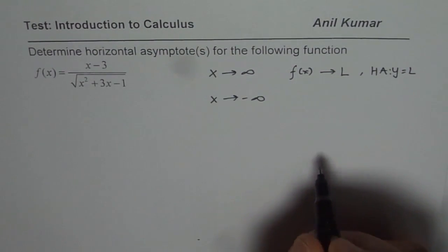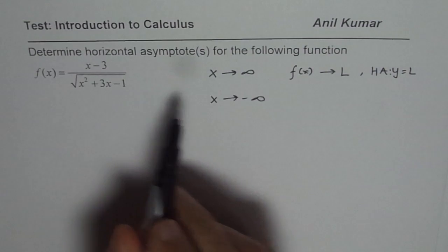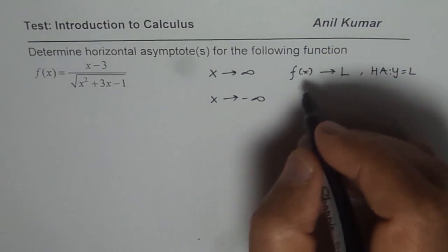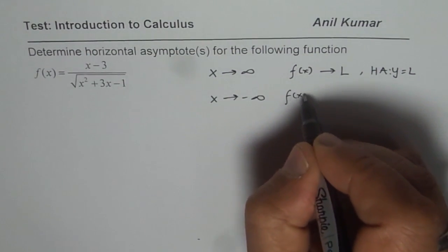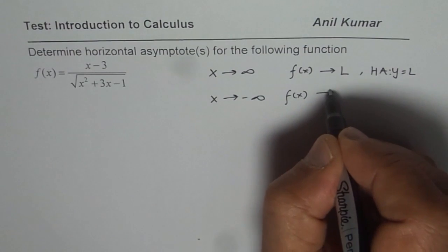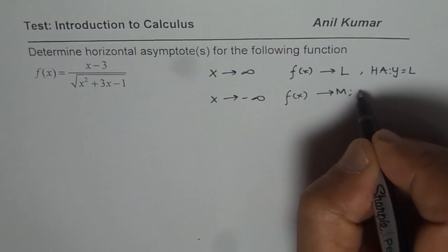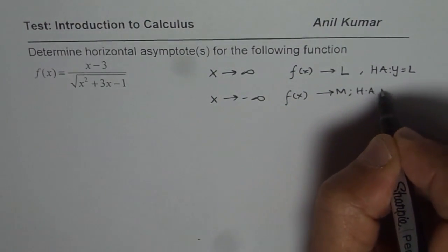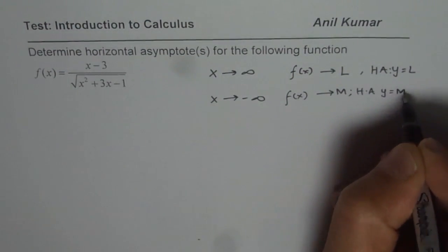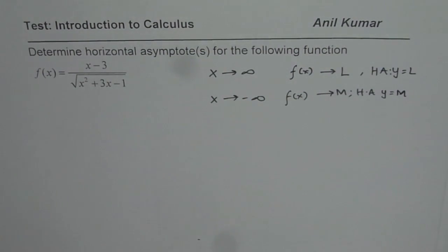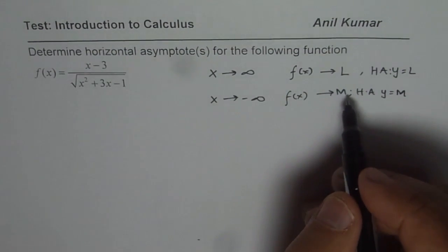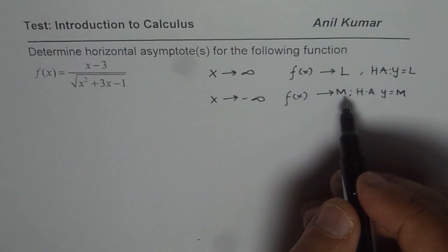There are times when the function could approach different values. For example, f(x) could approach a value m in another direction, giving a horizontal asymptote y equals m. And if the function does not approach any fixed value, then we say that the horizontal asymptote does not exist.